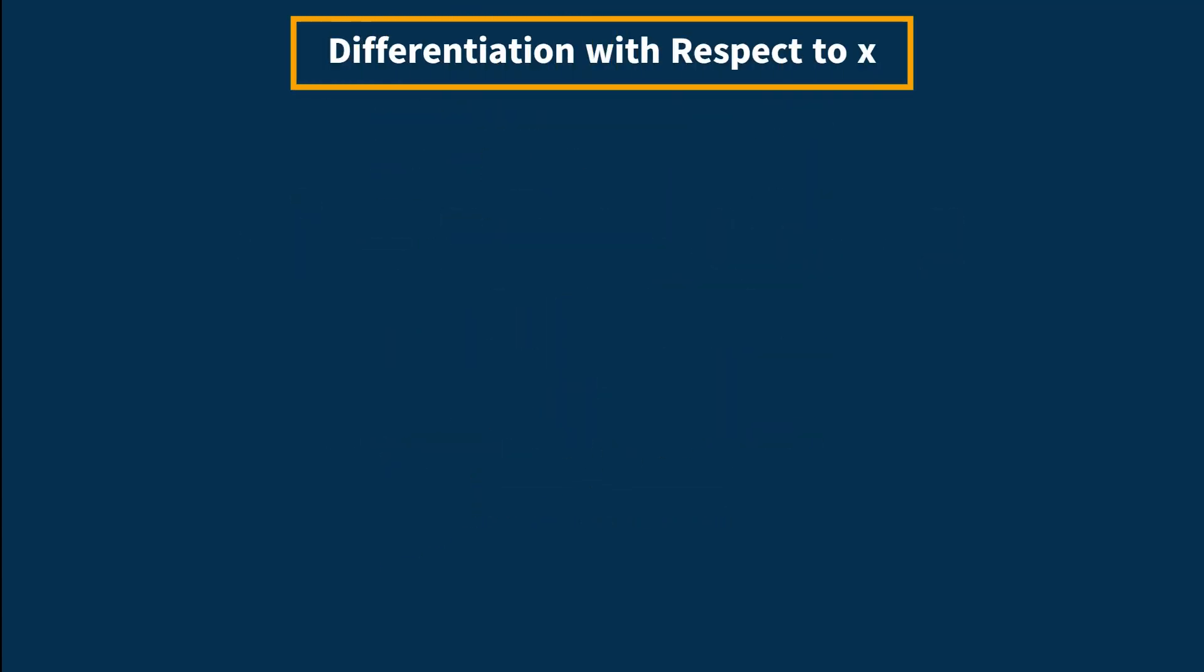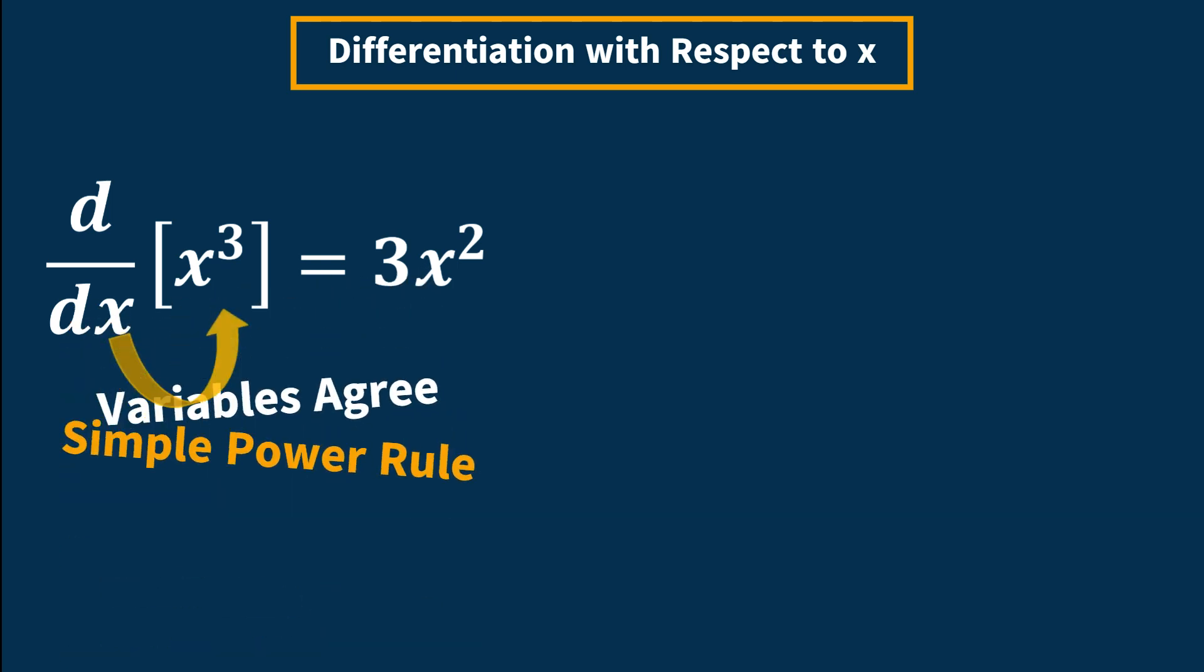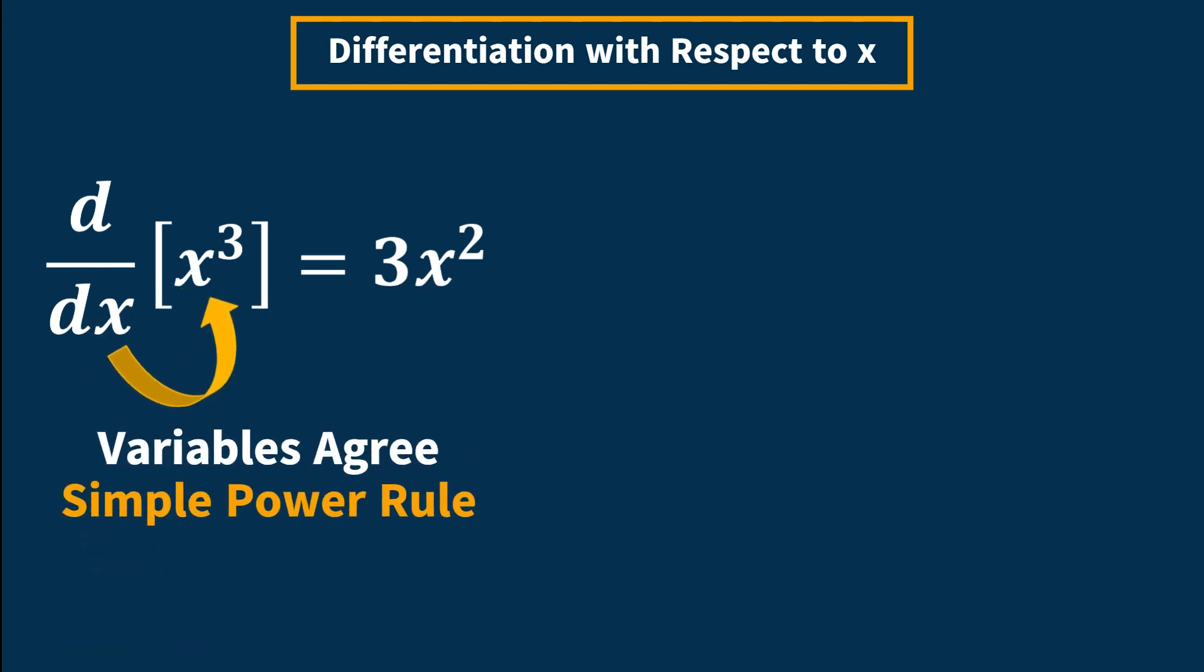Differentiation with respect to x. Let's look at a couple examples. The first equation is the derivative with respect to x of x cubed. We see that we are differentiating with respect to x and we only have an x term. The variables agree. That means we can solve this using the simple power rule.